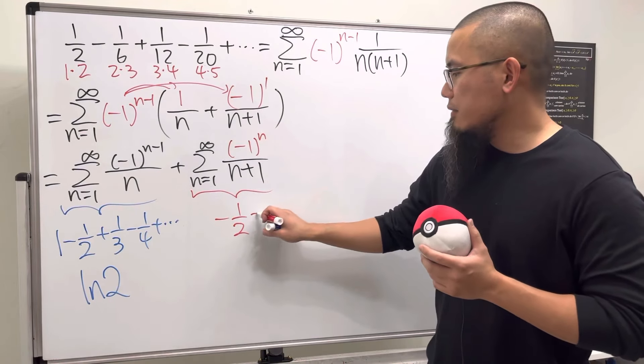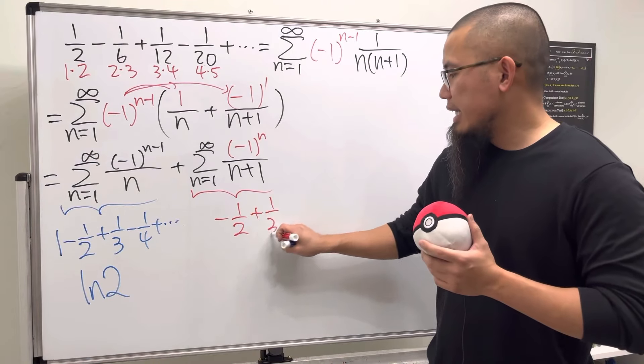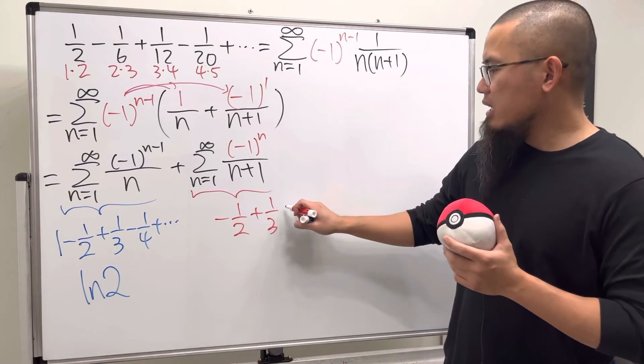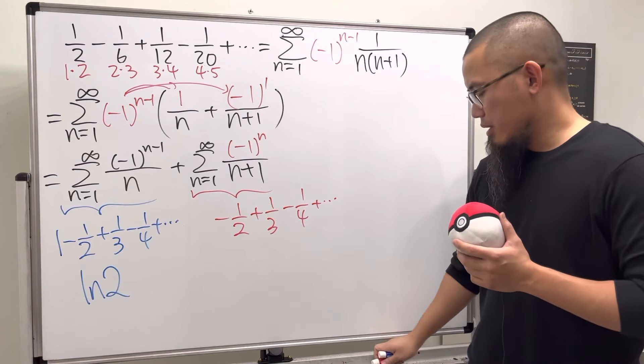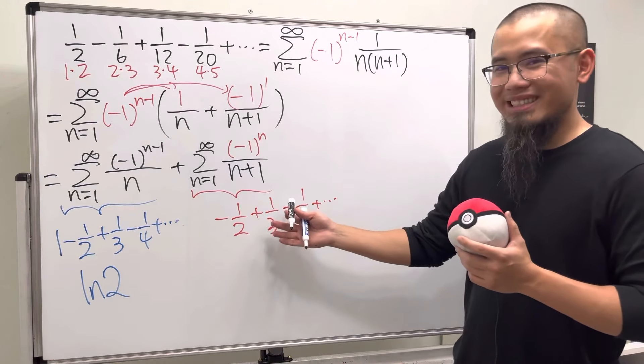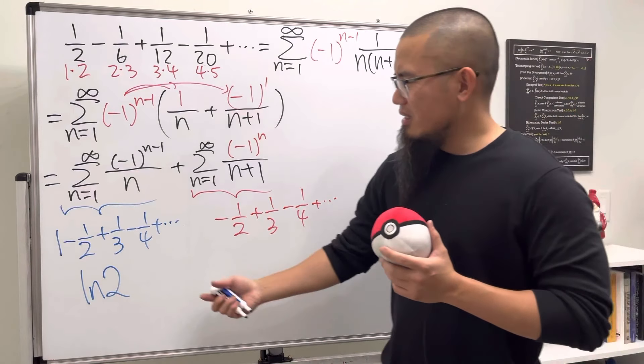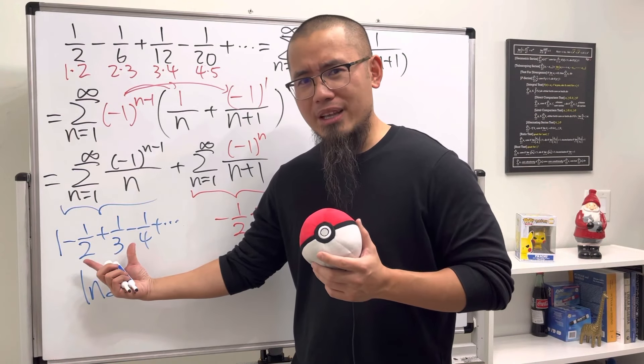And then next we get -1/4, and so on. Have a look: this right here, it's almost the same as that, right, except for we are missing the 1.